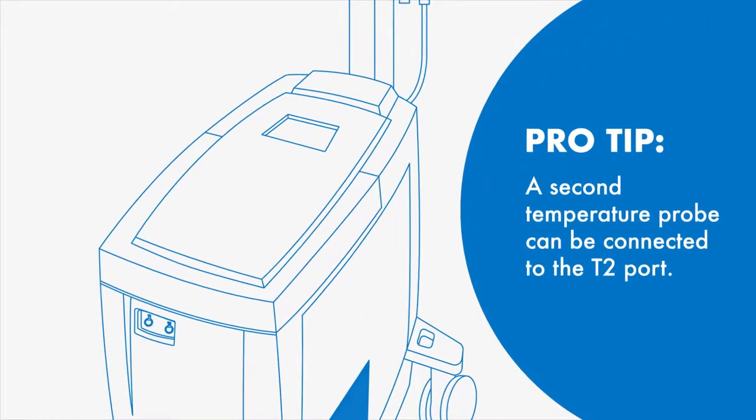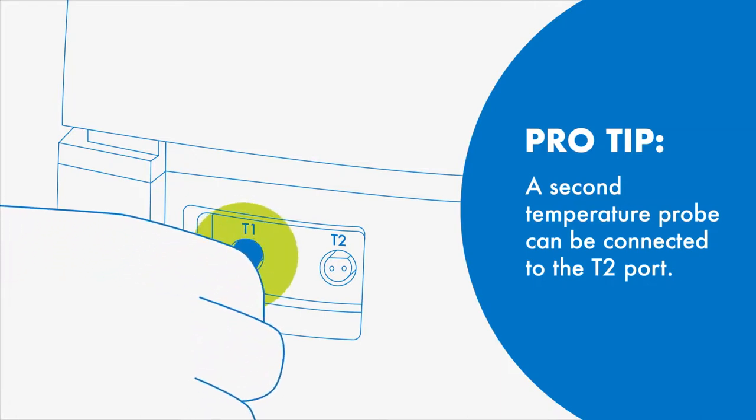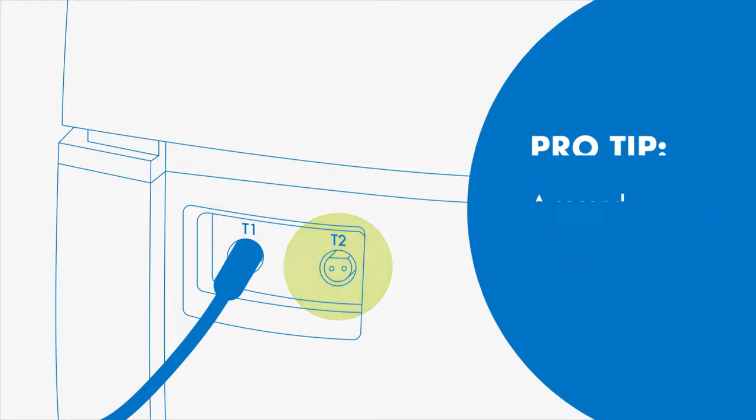Then plug the adapter cable into the T1 port. When connecting a second temperature probe to the ThermoGuard HQ, repeat the steps and use the T2 port.